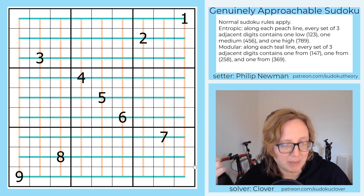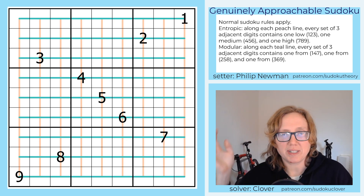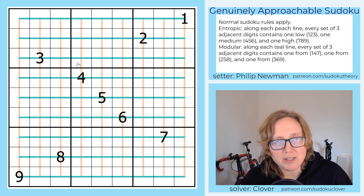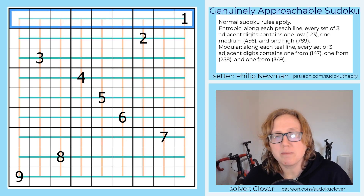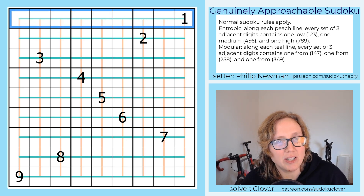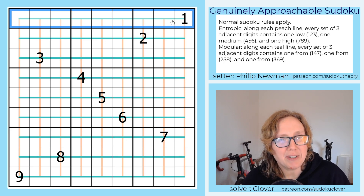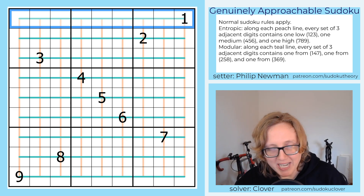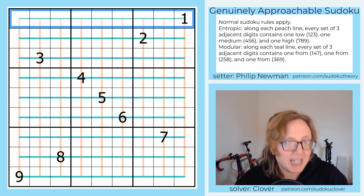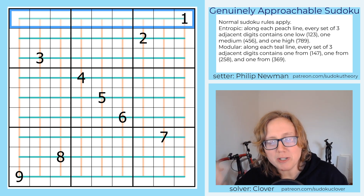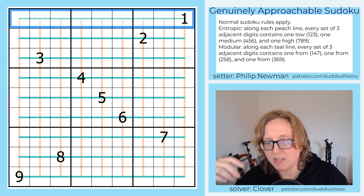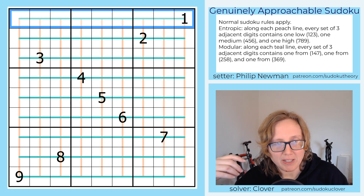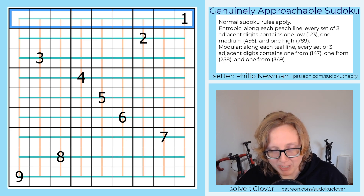So I'm going to kind of spoil something for you. First of all, what are the constraints? These horizontal teal lines that fill the entire grid are modular lines. Along a modular line, every set of three digits has to have one digit from 1, 4, and 7; one digit from 2, 5, and 8; and one digit from 3, 6, and 9. The reason they're called modular lines is because those groups of digits have the same value when you take them modulo three.